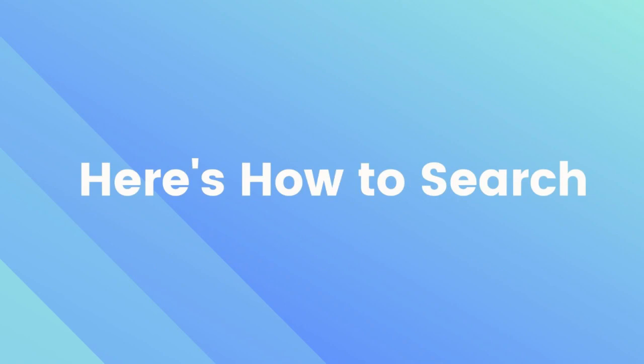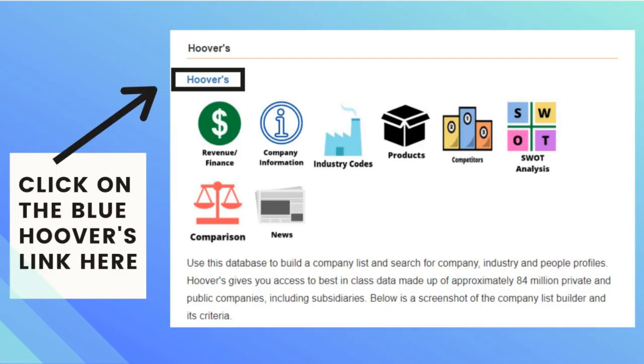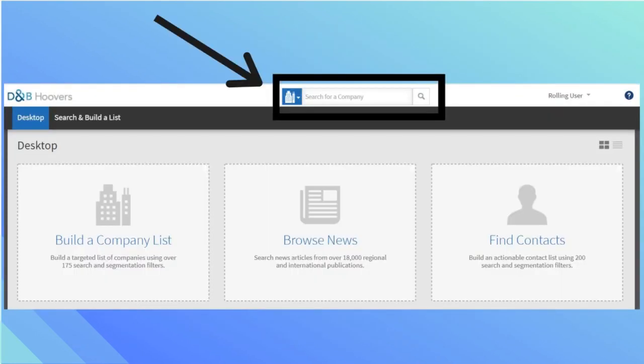Here's how to search in Hoovers. Click on the blue Hoovers link and it will take you to the home page. In the search a company box at the top of the page, type in a company. As an example, I will be typing in Boeing, which is a public company.